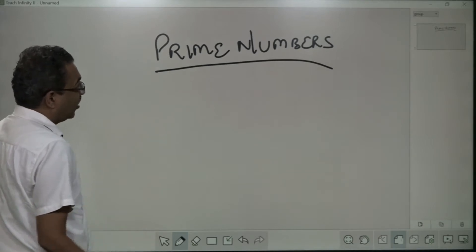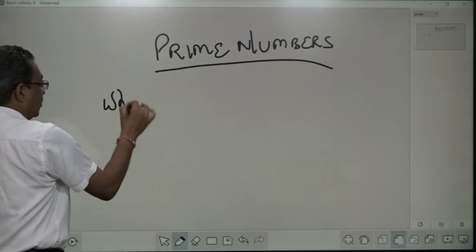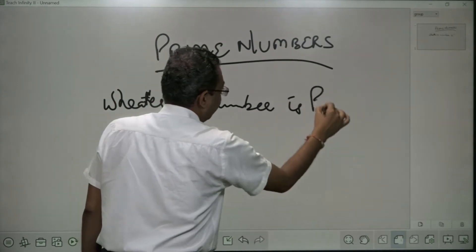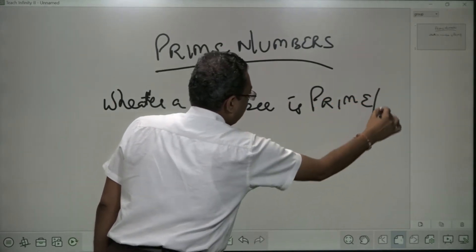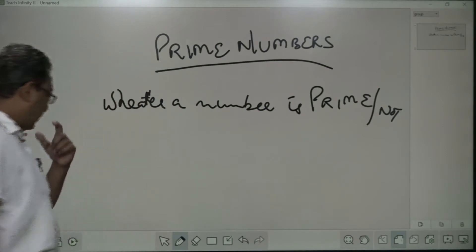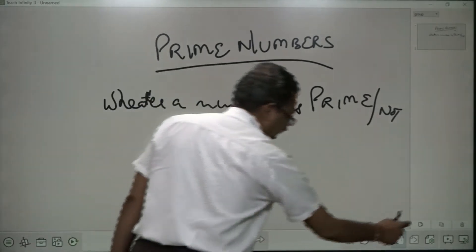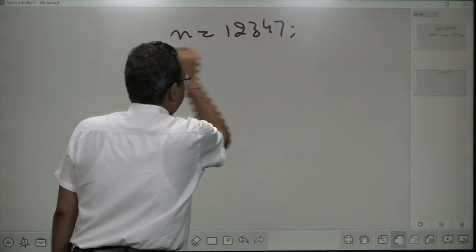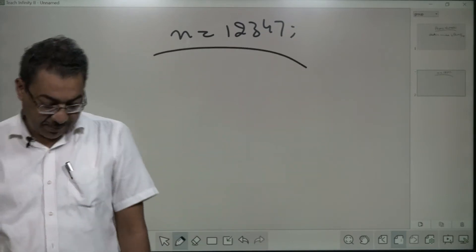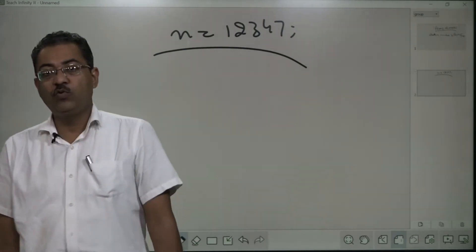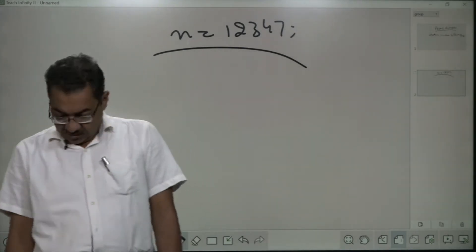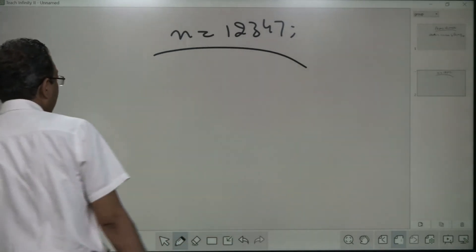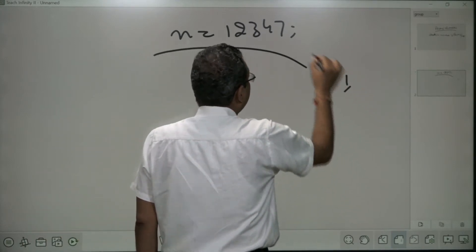For that, let us say n is a number and what I want is to check whether it is prime or not. What the way is — I hope everybody knew mathematically what a prime number is. If I go for this definition, the prime numbers are the numbers that are divisible by only two numbers: one is 1, or itself.